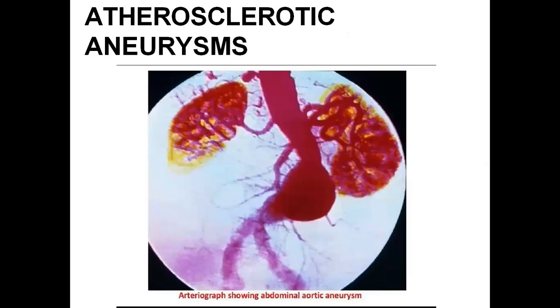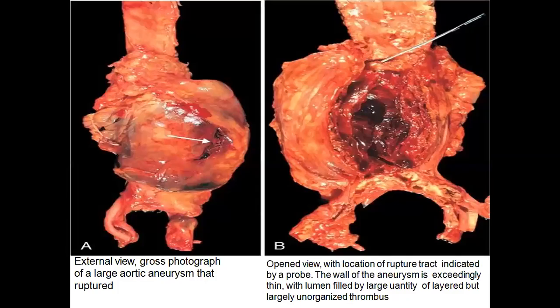This is how it looks — this is an abdominal aorta. This is an arteriograph of an abdominal aorta where you can see the bulging; both kidneys are also visible. This picture shows the rupturing of the aneurysm. In the first image, labeled A, there is a large aortic aneurysm that has ruptured, whereas B shows an open view of the location of the ruptured tract.